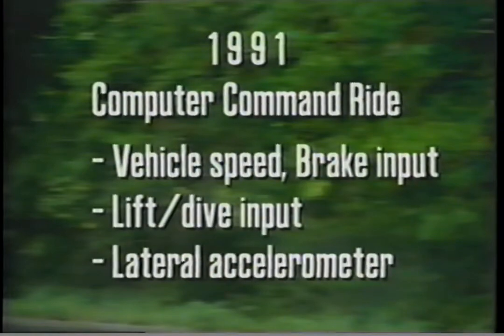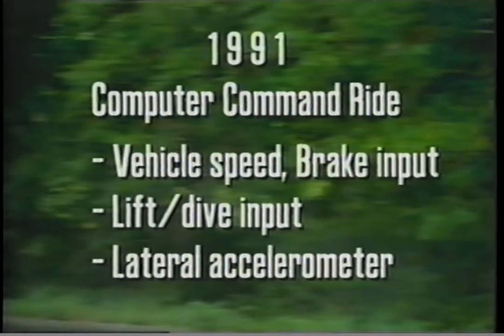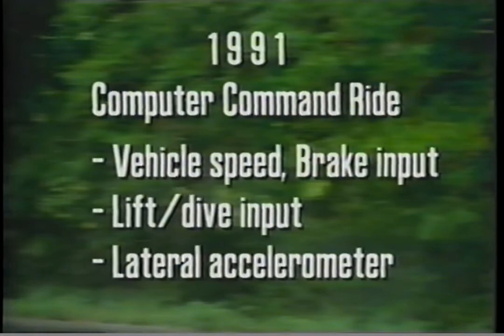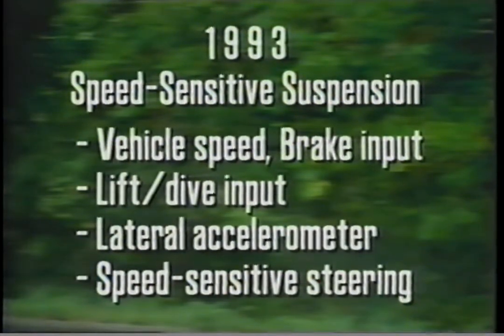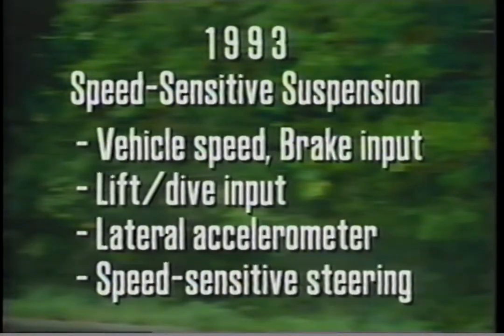That same model year saw the introduction of a new generation in suspension damping called Computer Command Ride. It was offered on 4.9-liter DeVille, Seville, and Eldorado models and incorporated the lateral accel input along with the lift-dive signal and base system. Then in 1993 came the third generation, which we call speed-sensitive suspension, consisting of the base system along with the lift-dive signal, lateral accel, and variable-assist power steering controls based on vehicle speed.